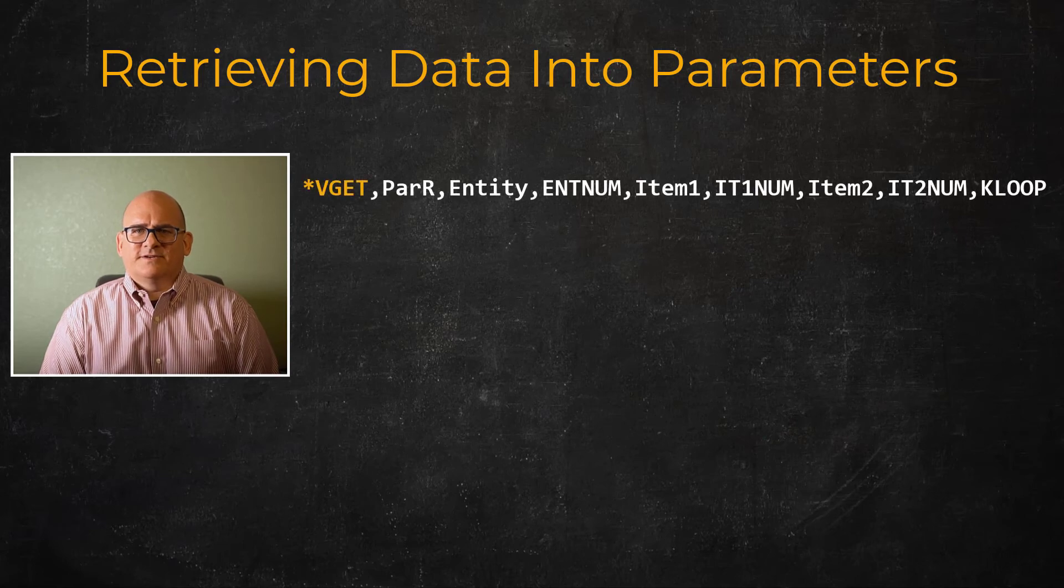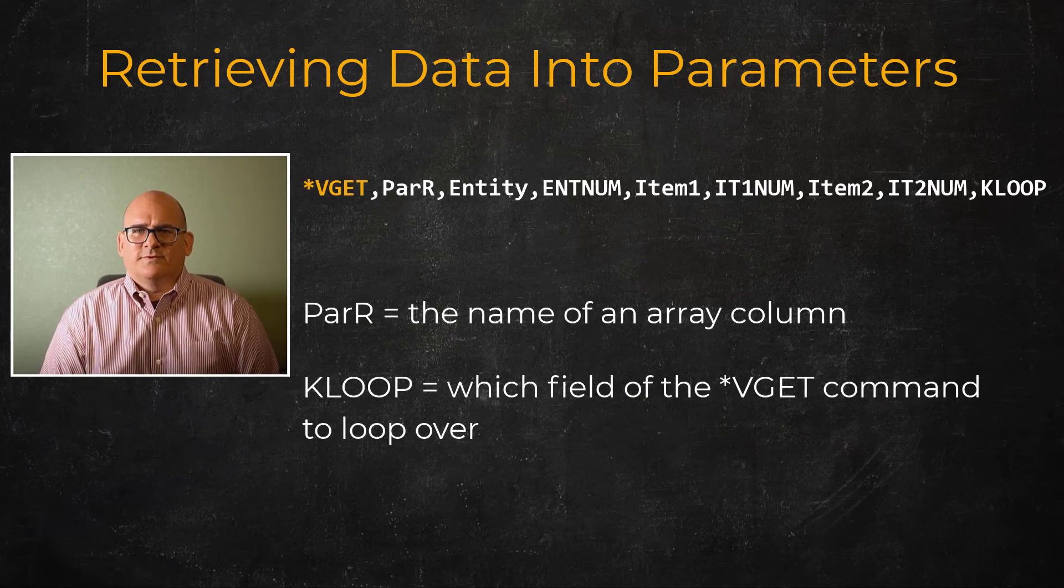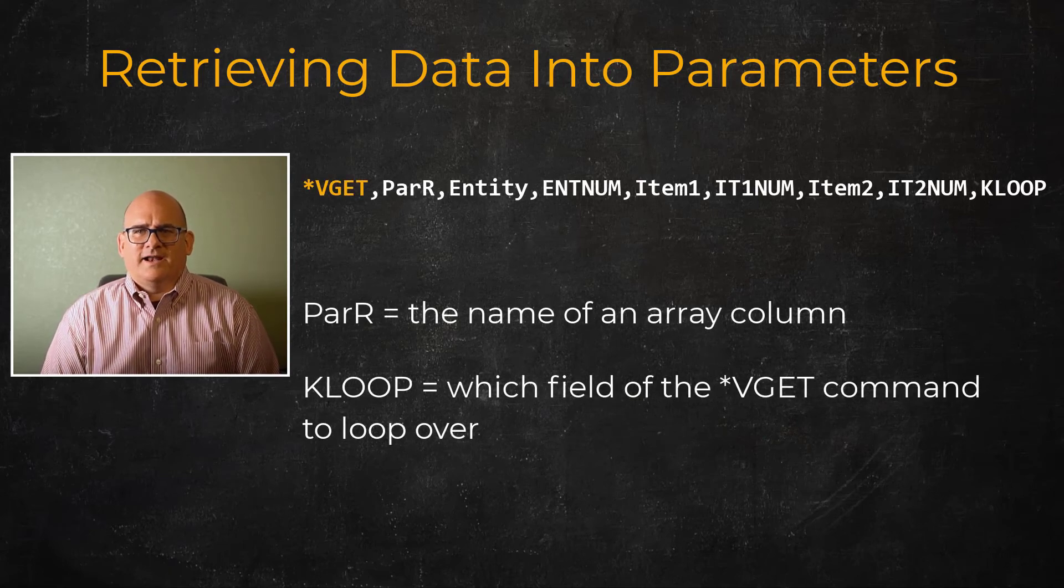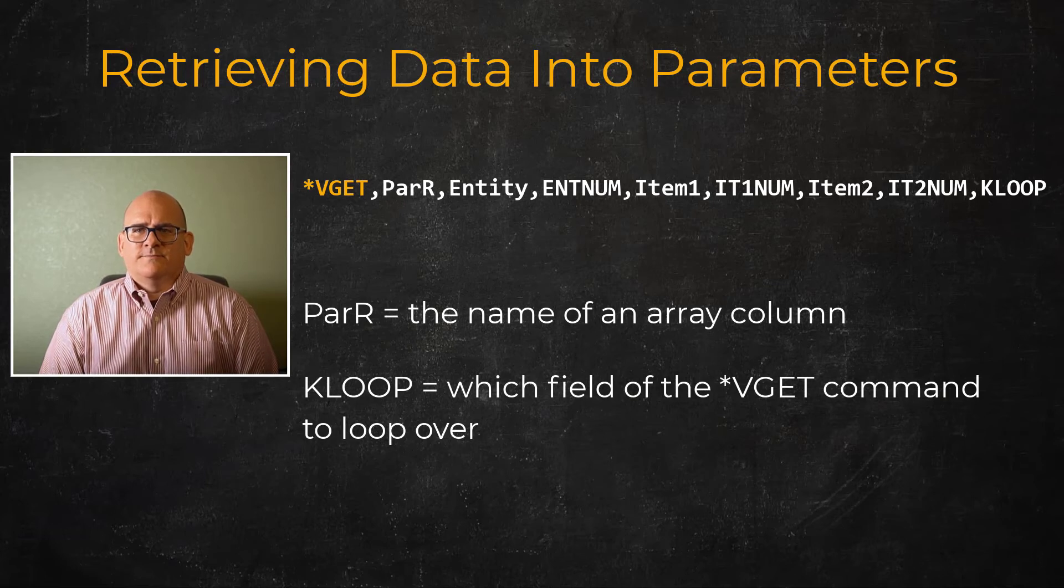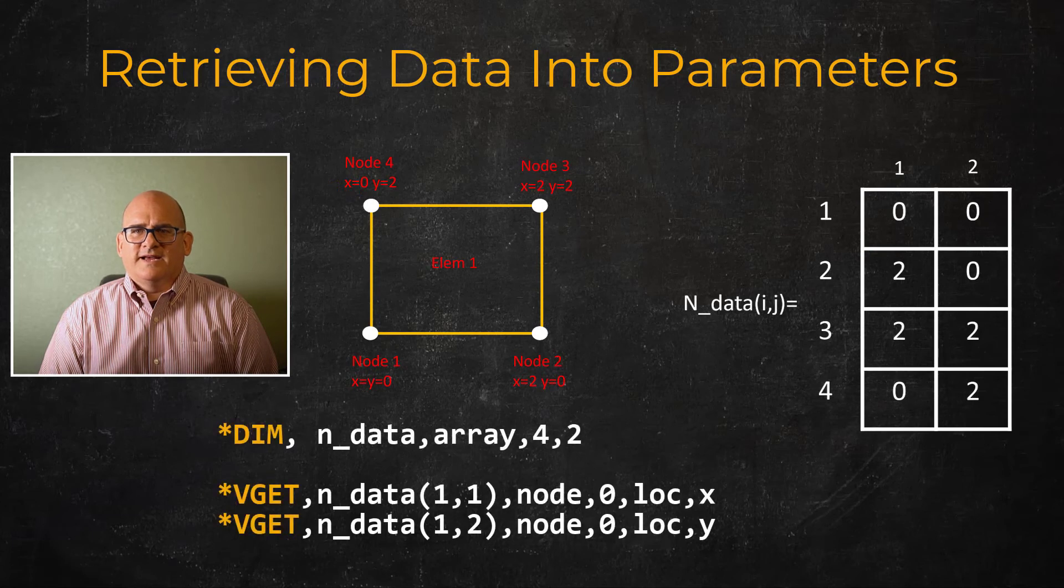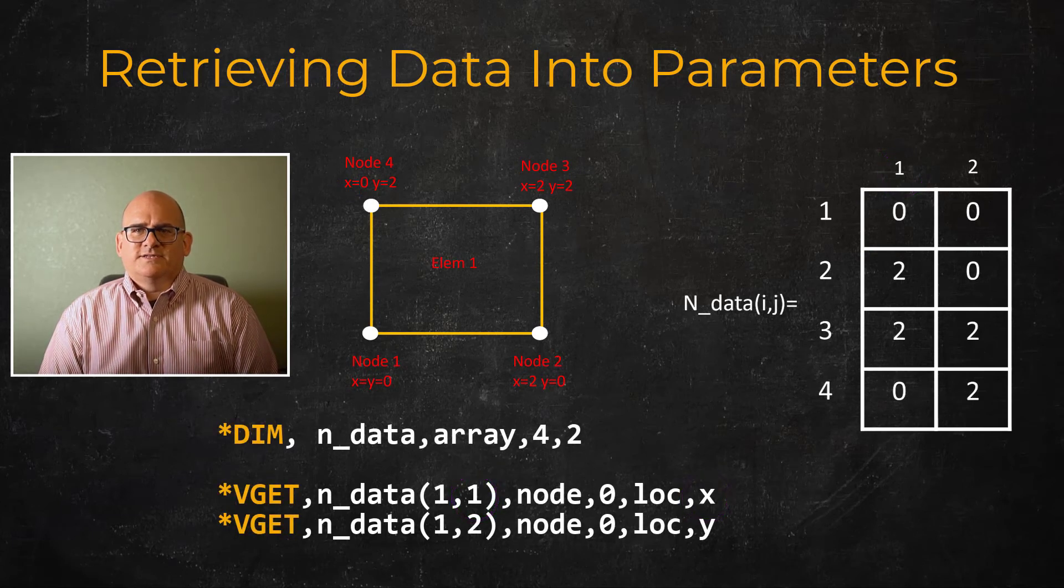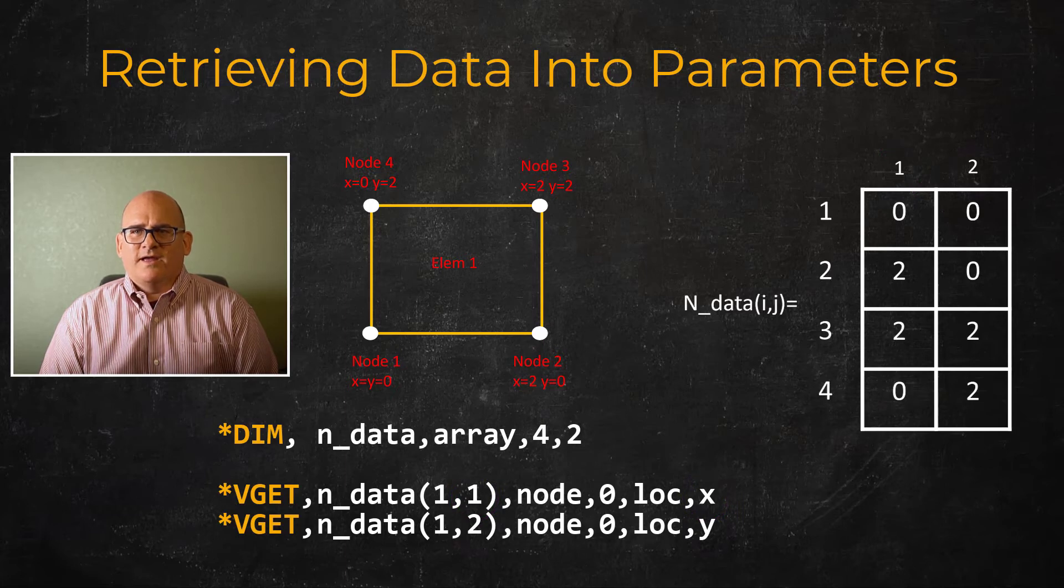*VGET is similar to *GET except that it gets multiple values of a specific item and stores it into multiple array elements. For example, we can *VGET the X location value of every node in the model and store it into the first column of an array with the number of rows equal to the count of nodes.